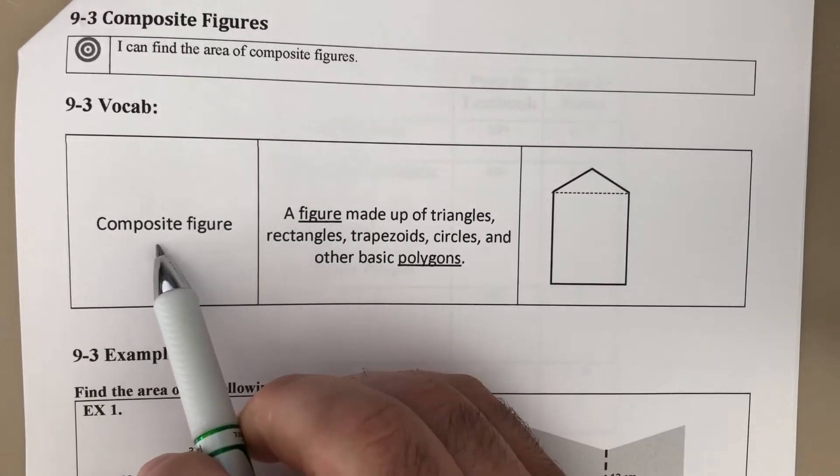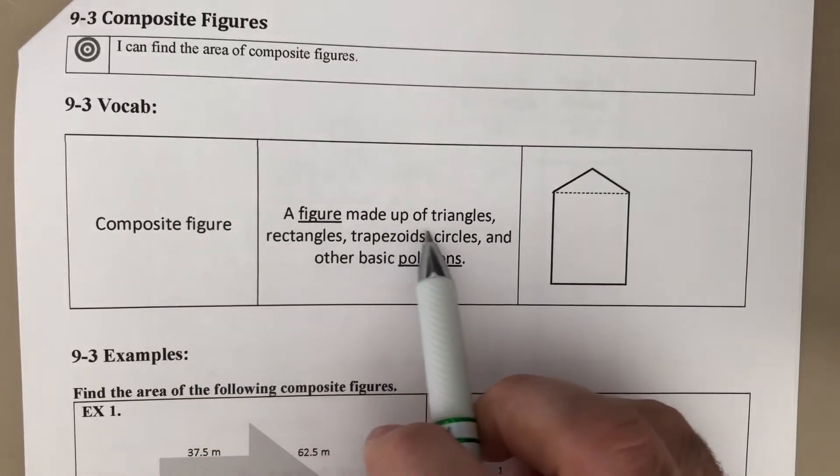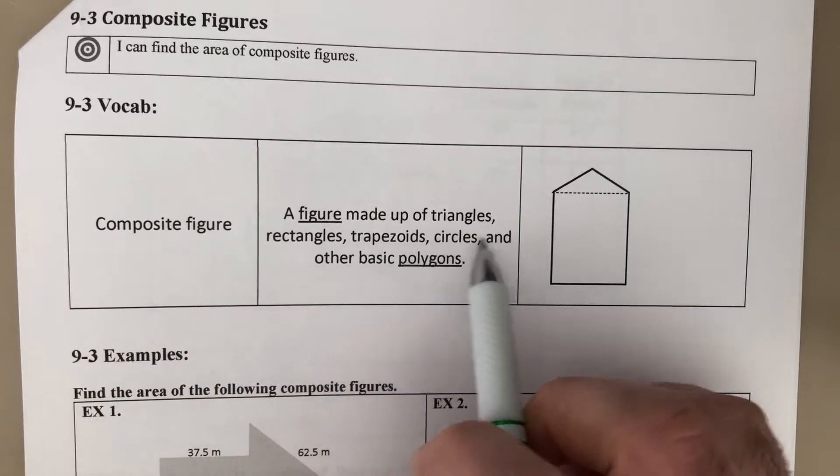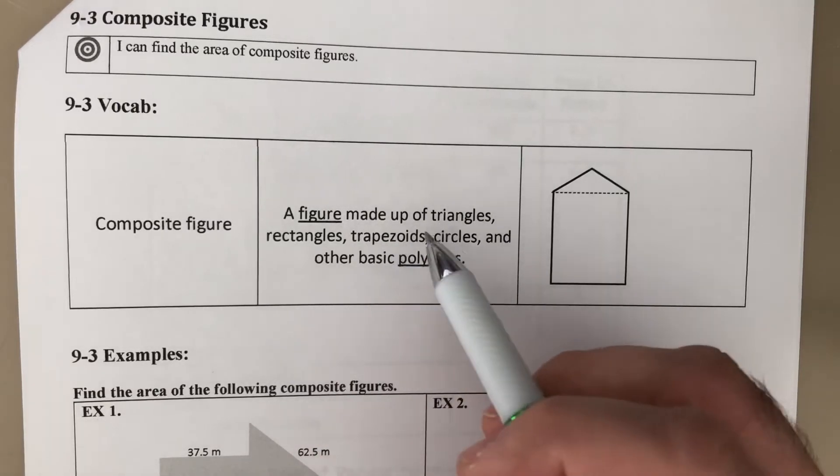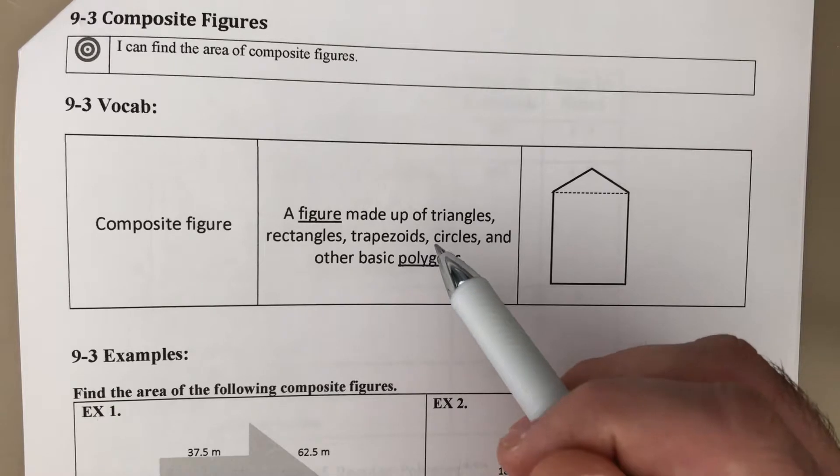And so what is a composite figure? A composite figure is made up of triangles, rectangles, trapezoids, circles, and other basic polygons. So some figure that's made up by multiple other figures basically is the way to see that.